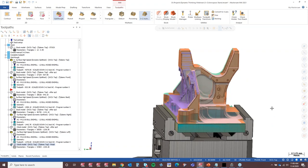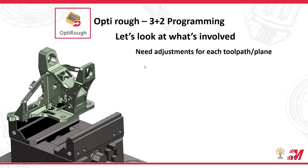Now I want to talk about things you have to be aware of with the OptiRough toolpath when doing 3 plus 2 programming. One of the biggest things is whether you're copying these toolpaths and changing settings, you're going to need to make adjustments for each toolpath and each plane. It's just the nature of programming with OptiRough. It has very specific linking planes — after all, it is a 3-axis toolpath that you're applying to different planes around a part.